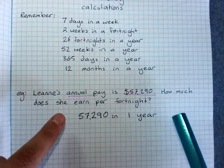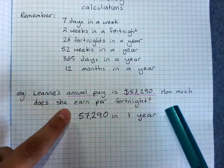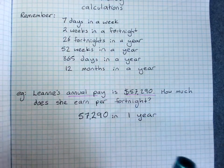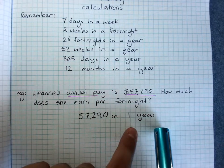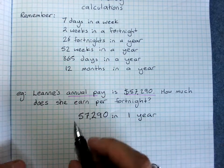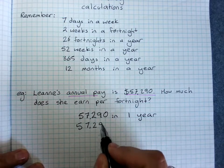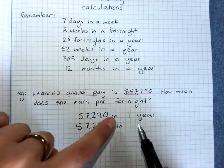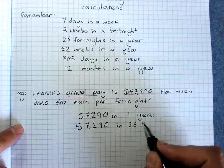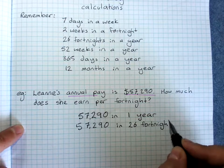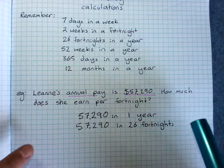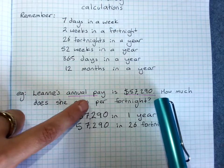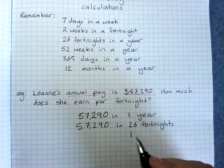Instead of writing one year, we write 26 fortnights, because that's what one year equals. So $57,290 in 26 fortnights. From there, that's the information we need to find out per fortnight, which is one fortnight.